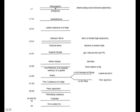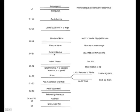L1 forms the iliohypogastric and the ilioinguinal nerves, and those innervate the internal oblique and transverse abdominis. L2 forms the genitofemoral nerve. L2-3 forms the lateral cutaneous nerve. L2-4 forms both the obturator and the femoral — remember, one is anterior and one is posterior. The obturator nerve goes to the muscles of the medial thigh; the femoral nerve goes to the muscles of the anterior thigh. L4-S1 is the superior gluteal, which does glute medius, minimus, and the TFL.